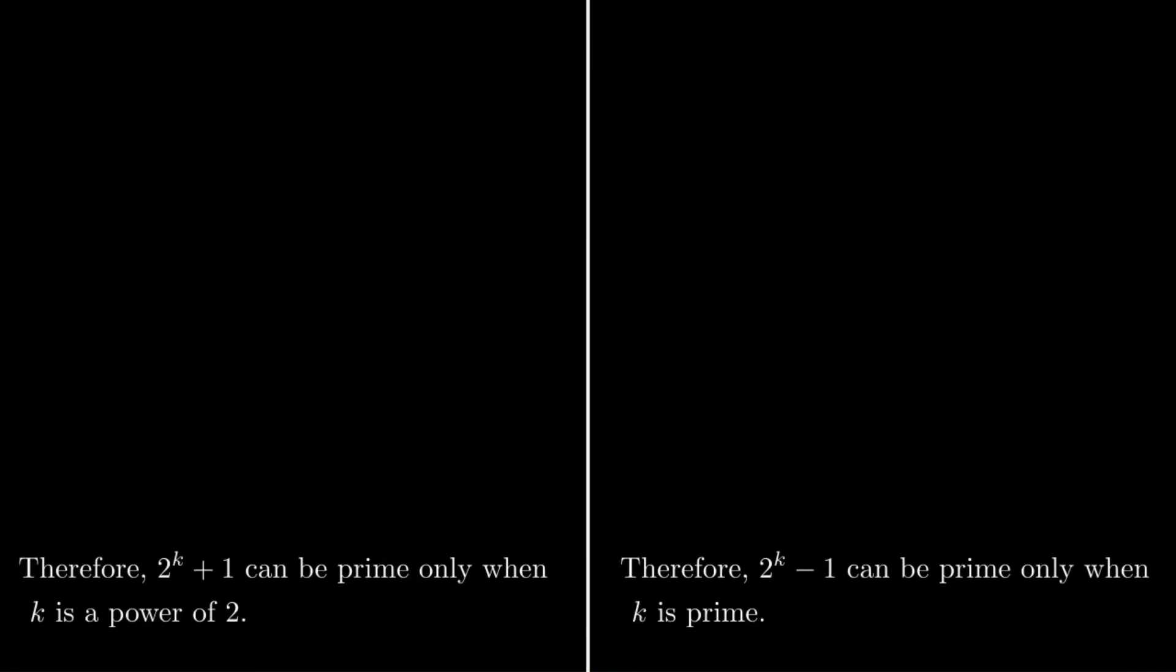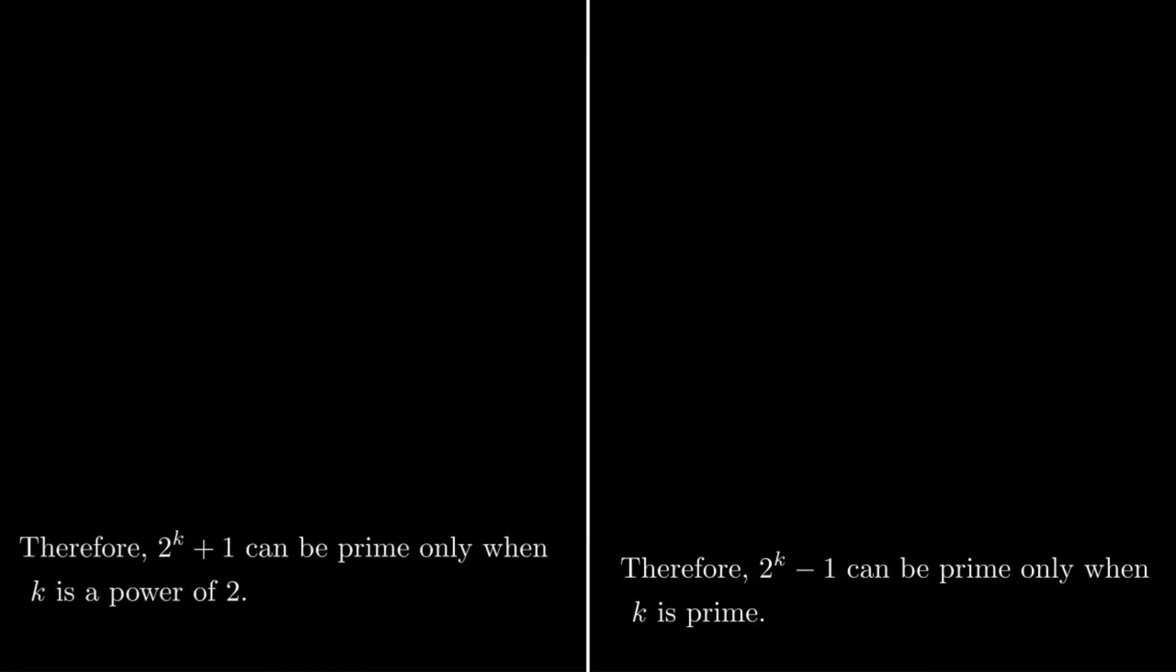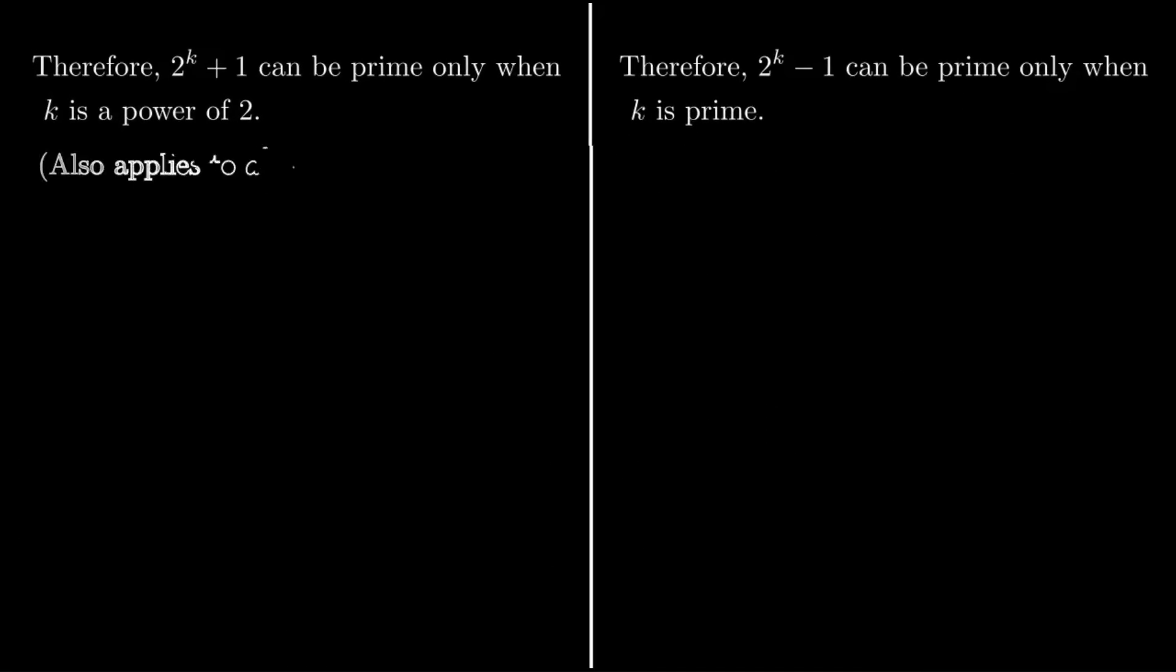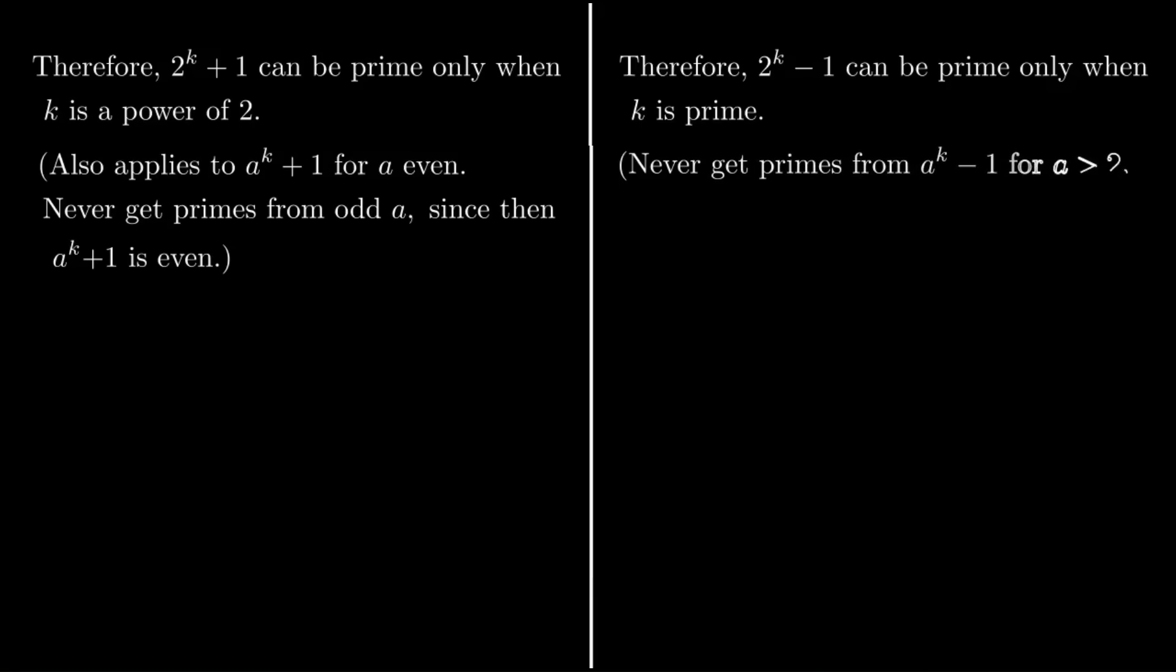Now, the same argument we used for Fermat numbers works no matter what the base is, as long as it's even. It won't work if a is odd, because then you're working with an even number, so that won't be prime. With the Mersenne numbers, we can't really change the 2 to any other number, because we write it as a difference of powers, and a^k - 1 is always divisible by a - 1. So there's no way that's going to be prime unless a is 2, because then the factor is 1, and that doesn't give us a factorization that would force the number to be composite.